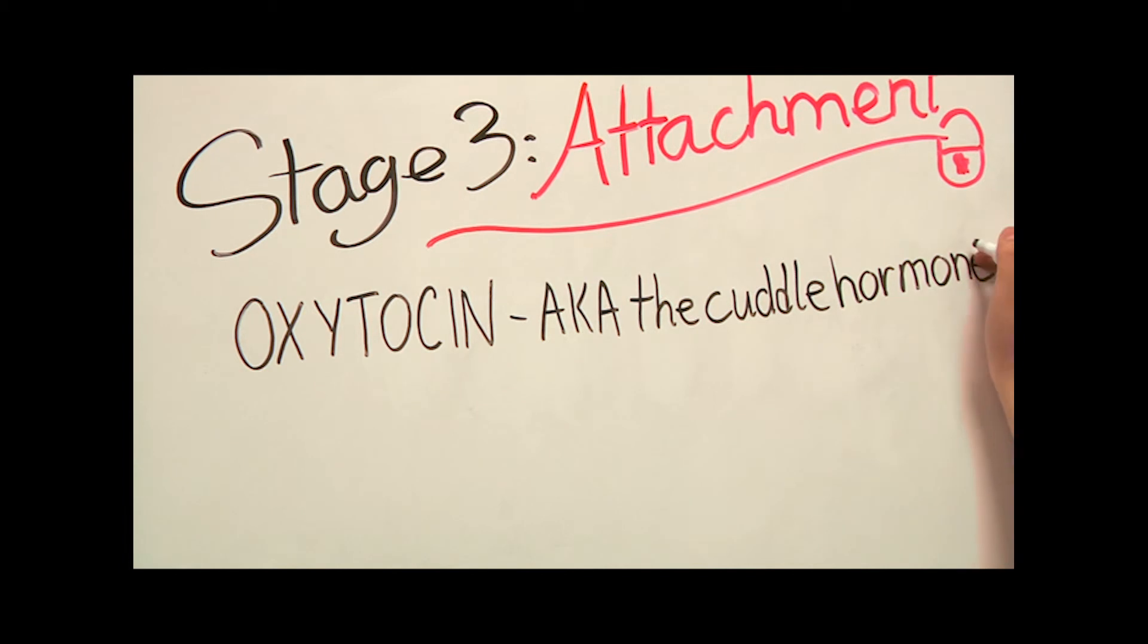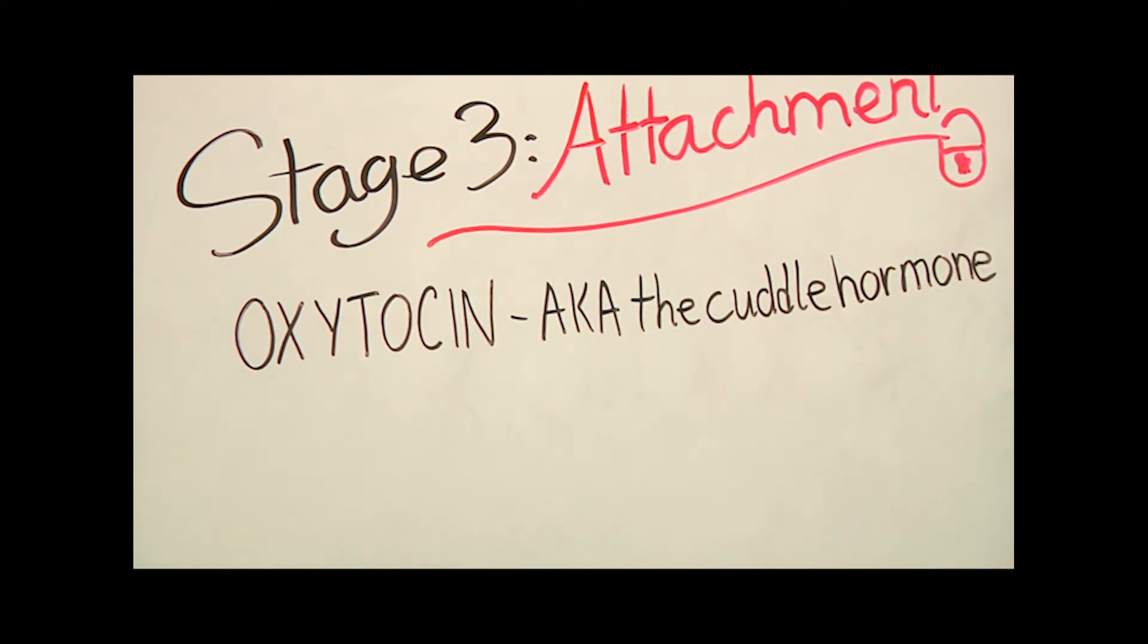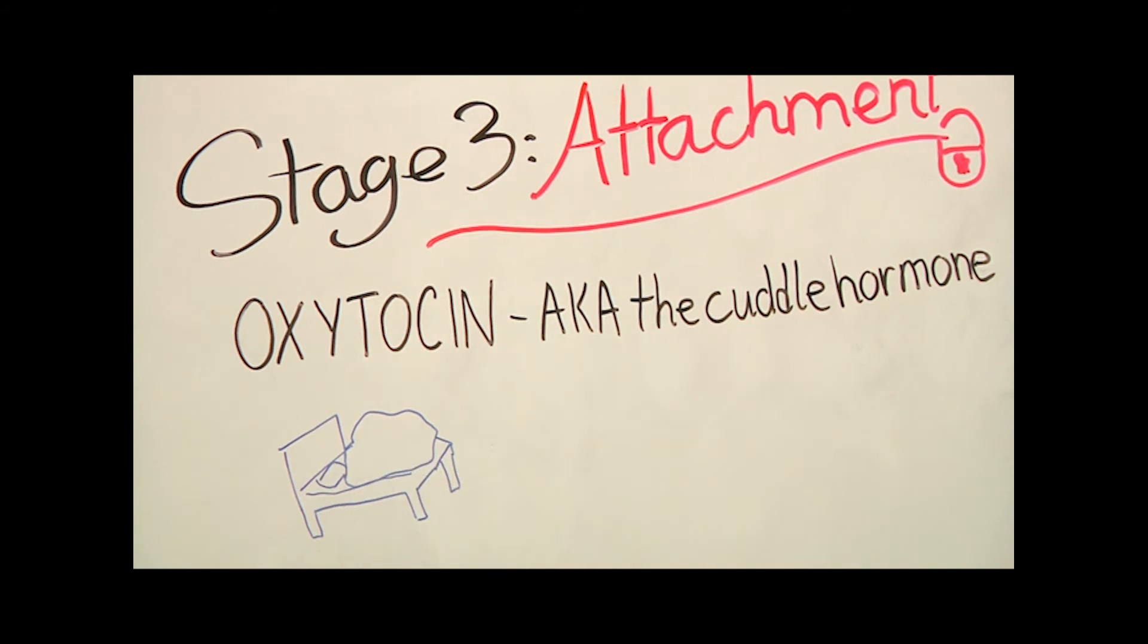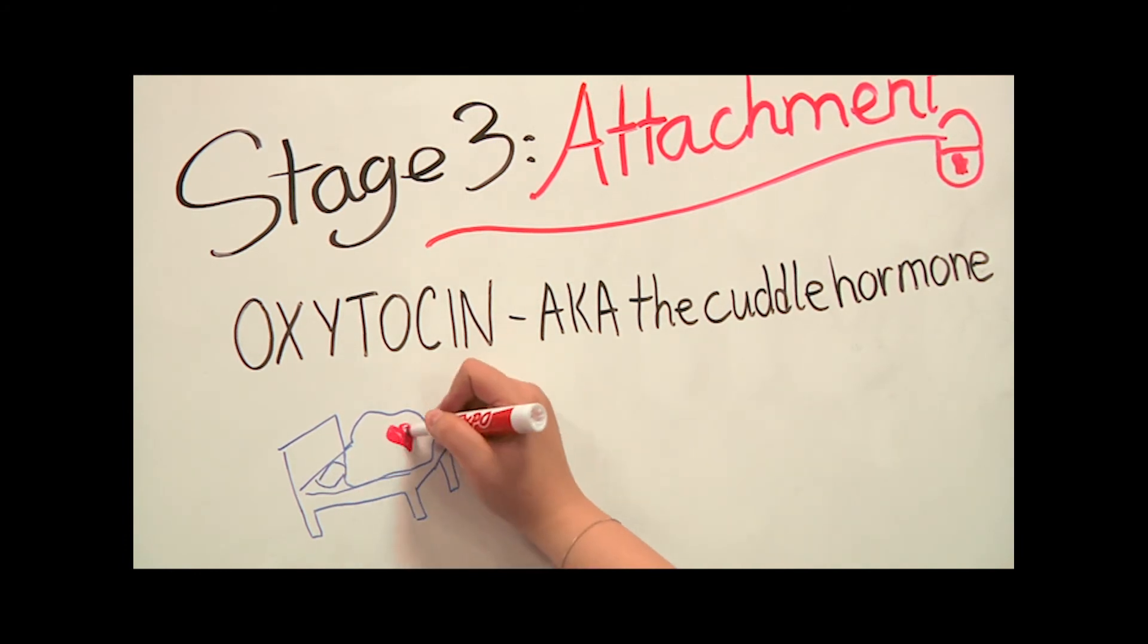Oxytocin, the cuddle hormone. Oxytocin is a powerful hormone released by men and women during orgasm. It probably deepens the feelings of attachment and makes couples feel much closer to one another after they have had sex. The theory goes that the more sex a couple has, the deeper their bond is.